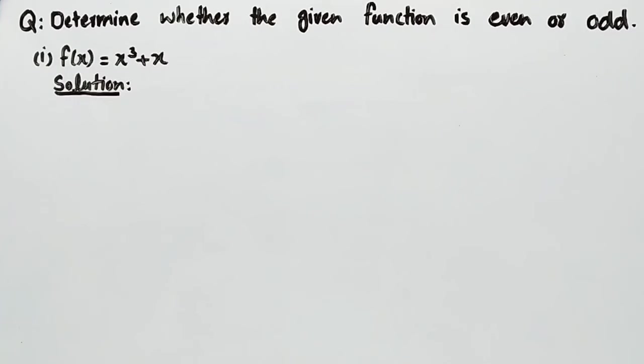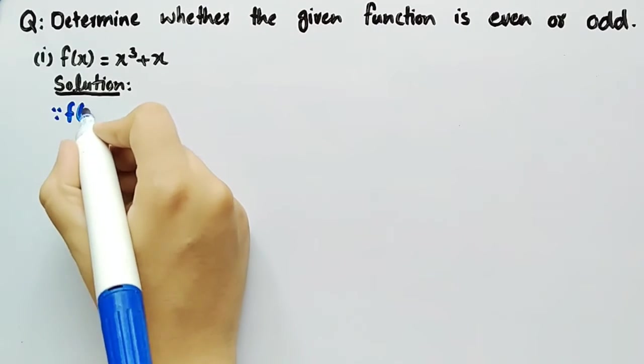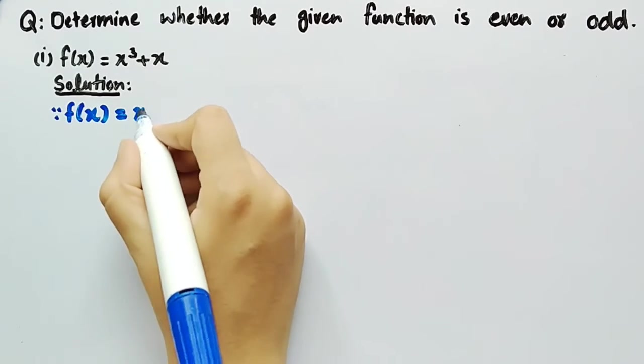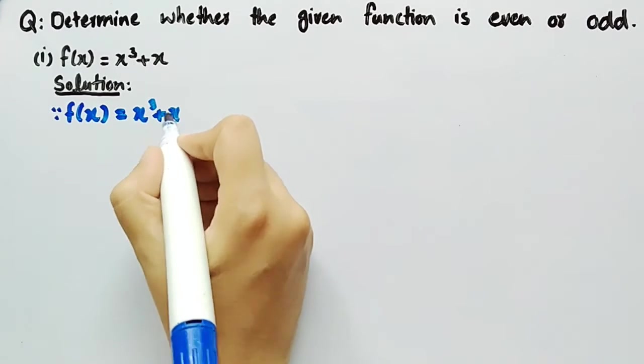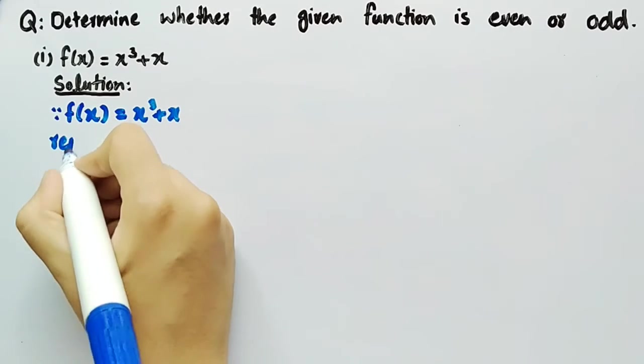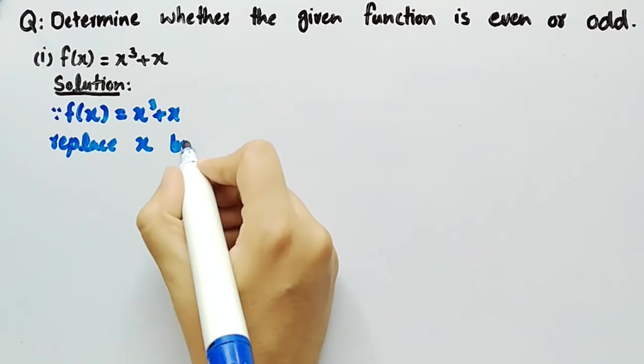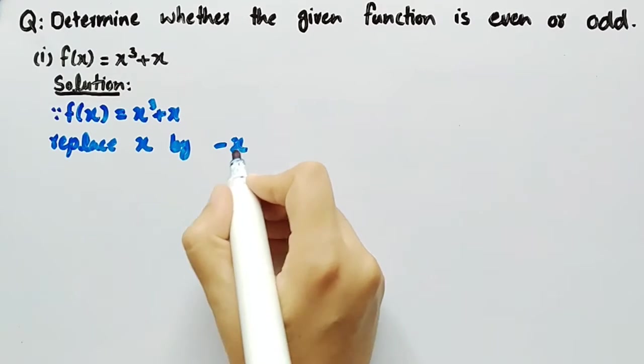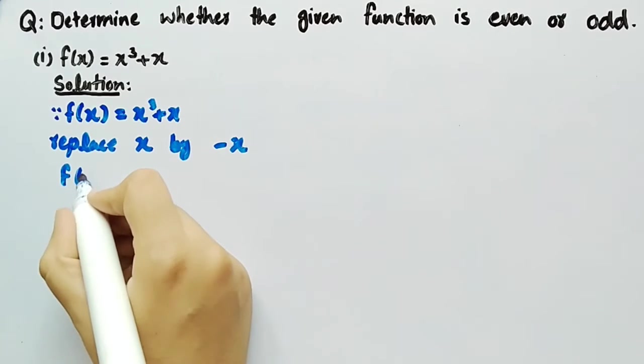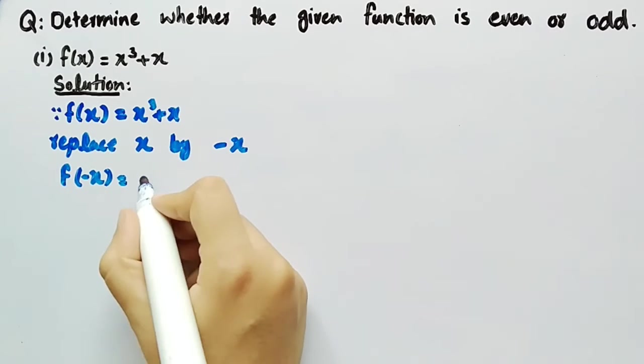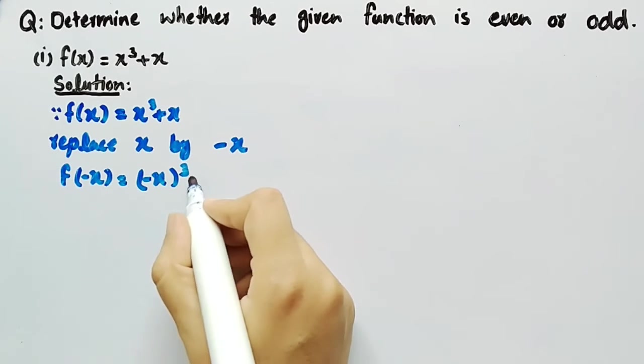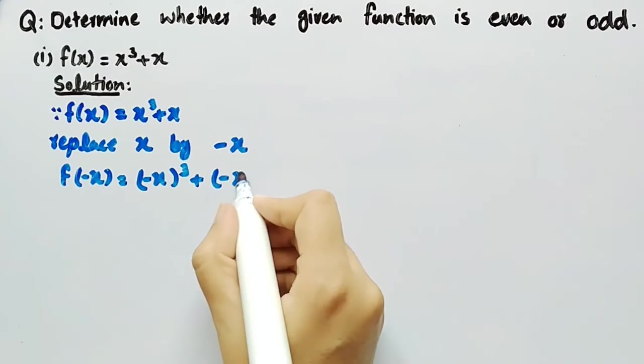Now coming towards its solution, since it is given that f(x) = x³ + x. If we replace x by -x, we get f(-x) = (-x)³ + (-x).